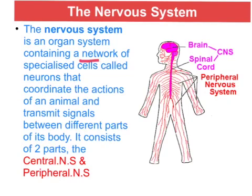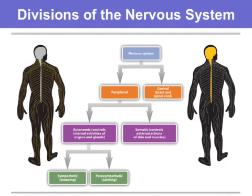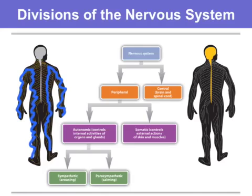The nervous system is a network of nerves that coordinates the actions of an animal and transmits signals between different body parts. There are two major divisions of the nervous system: the central and peripheral. The word peripheral means outside, so when we talk about the peripheral nervous system we're talking about all the nerves outside of the central nervous system. In this clip, I'm focusing on the central nervous system.